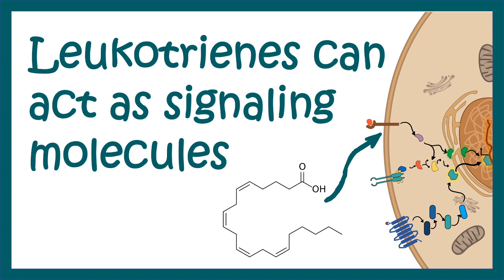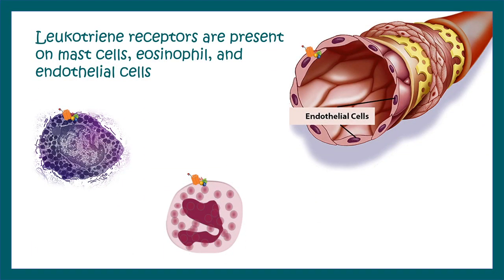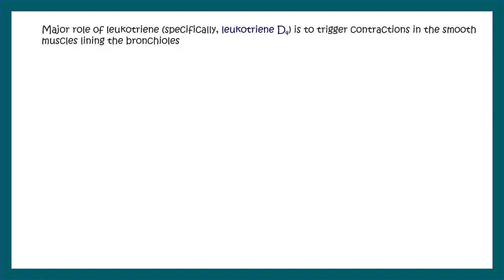Now let's understand how leukotriene signaling works. Leukotriene receptors are a class of G protein-coupled receptors — they generally work by elevation of cyclic AMP in the cell, leading to several pro-inflammatory cytokine genes. However, a few leukotriene receptors are also of the nuclear receptor type or PPAR receptor type. These receptors are generally found in eosinophils, endothelial cells, and mast cells. Since they are found in endothelial cells and smooth muscle cells, they have an important role in smooth muscle contraction, which connects their physiological role with disease.